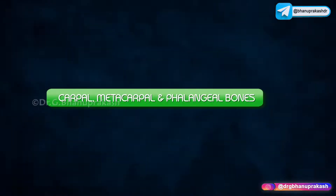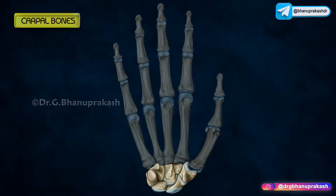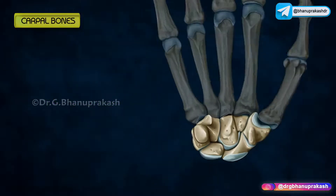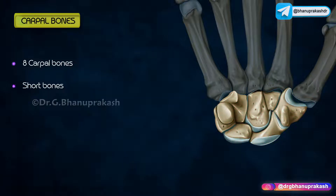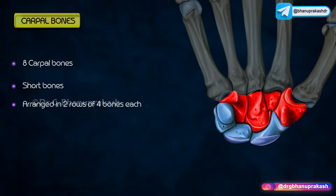Carpal, metacarpal, and phalangeal bones. Carpal bones: There are eight carpal bones. All of these are short bones and are arranged in two rows of four bones each.